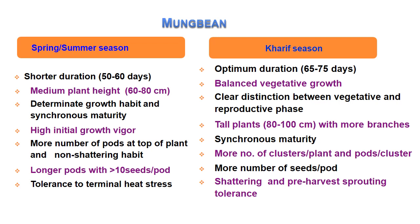For mungbean in summer or Zaid season, short duration of 50–60 days is recommended in fallow lands to allow the next crop to be sown as early as possible. Recommended features include: medium plant height of 60–80 cm, determinate growth habit, synchronous maturity, high initial growth vigor, more pods at the top of the plant, non-shattering habit, longer pods with more than 10 seeds per pod, and tolerance to terminal heat stress.